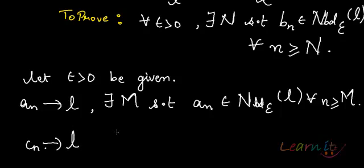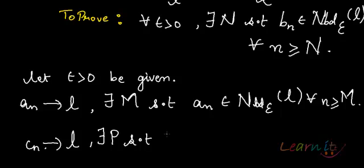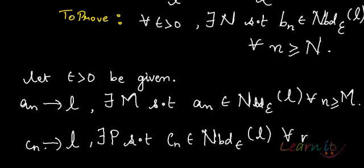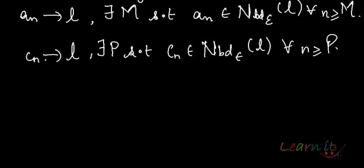Similarly, for c_n, by the definition of convergence, let us take some other natural number as a benchmark — call it P. So there exists a P natural number such that c_n belongs to the epsilon neighborhood of L for all n greater than or equal to P.